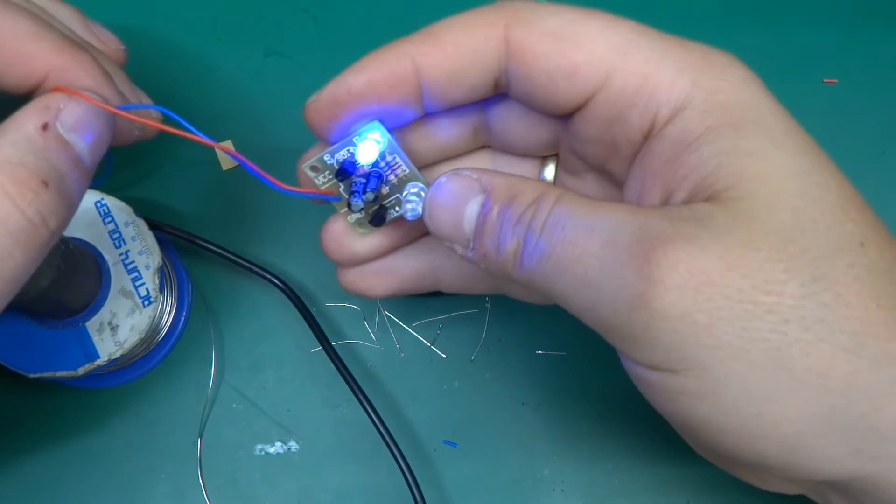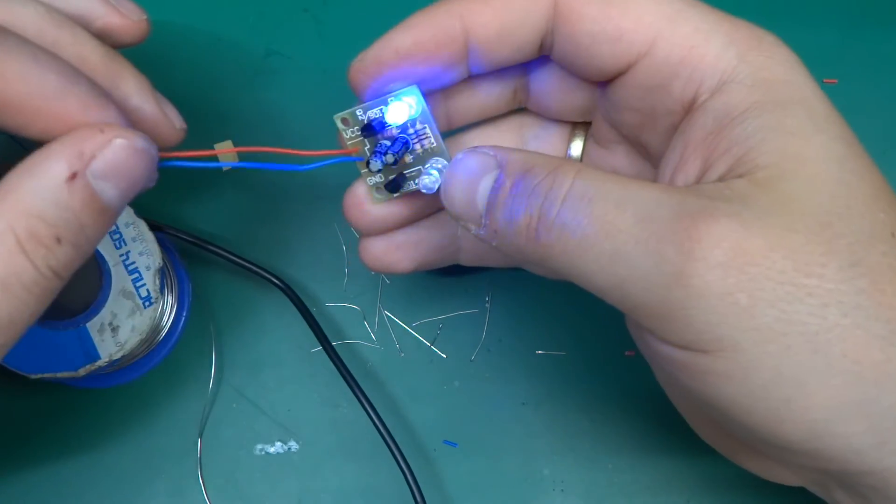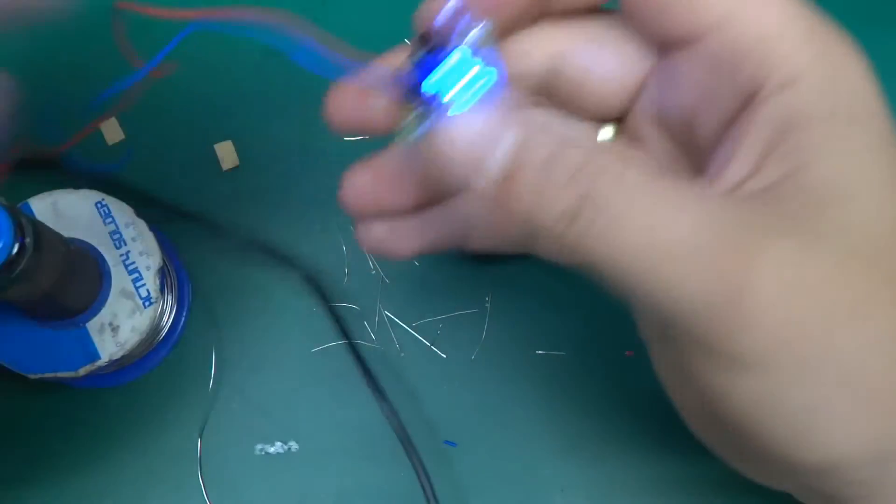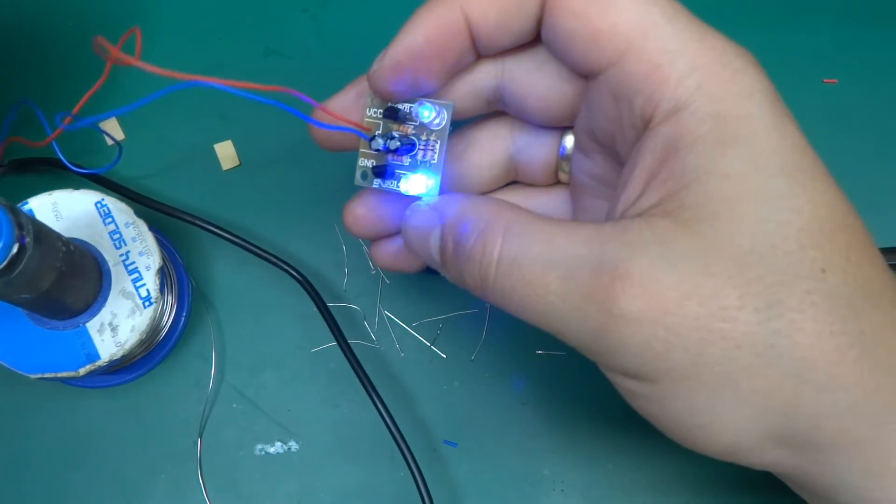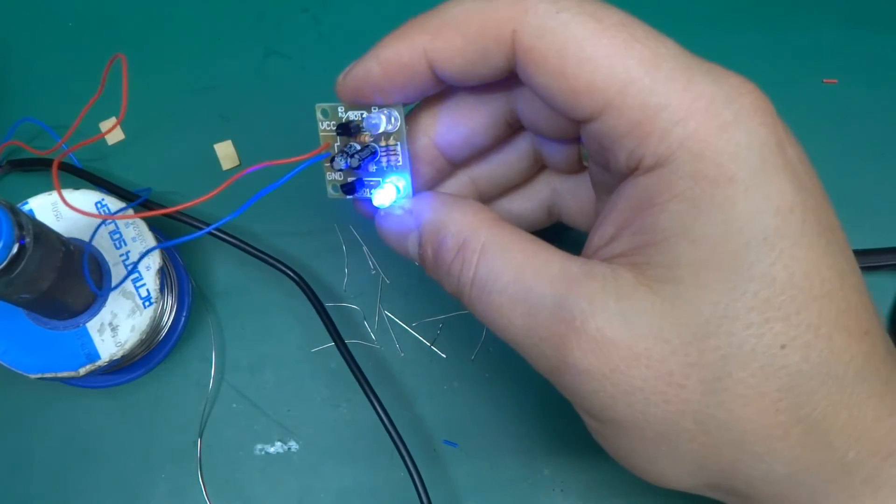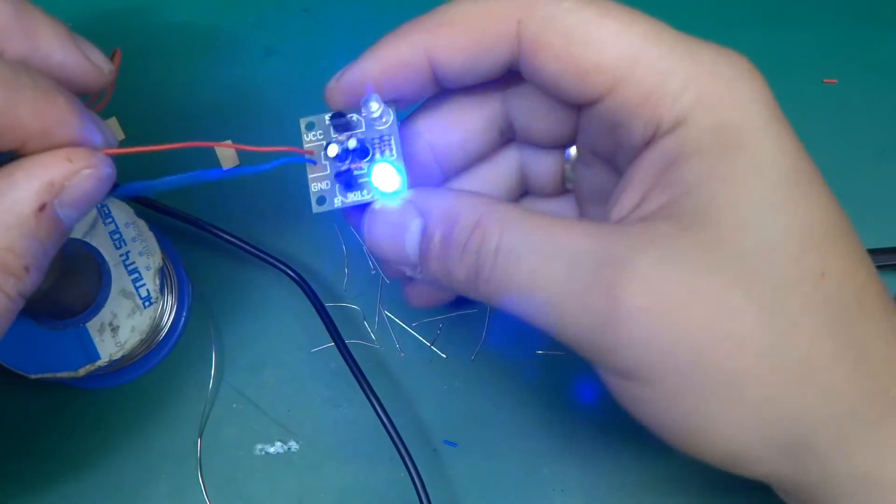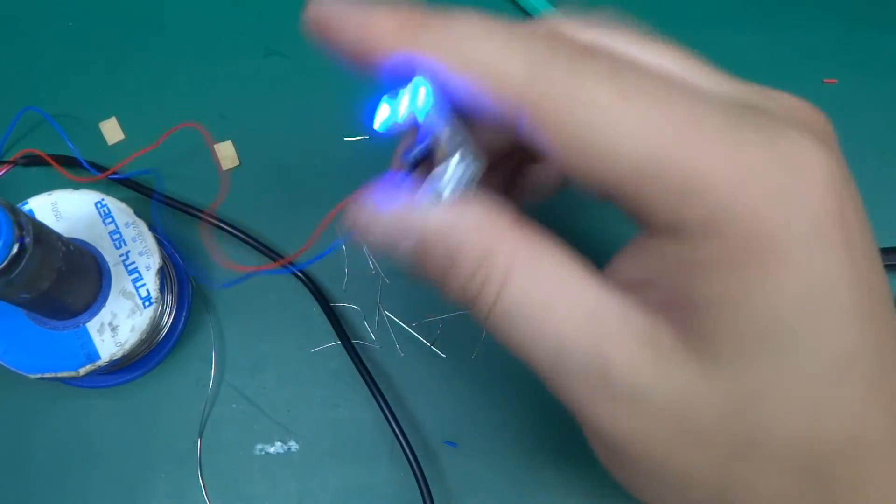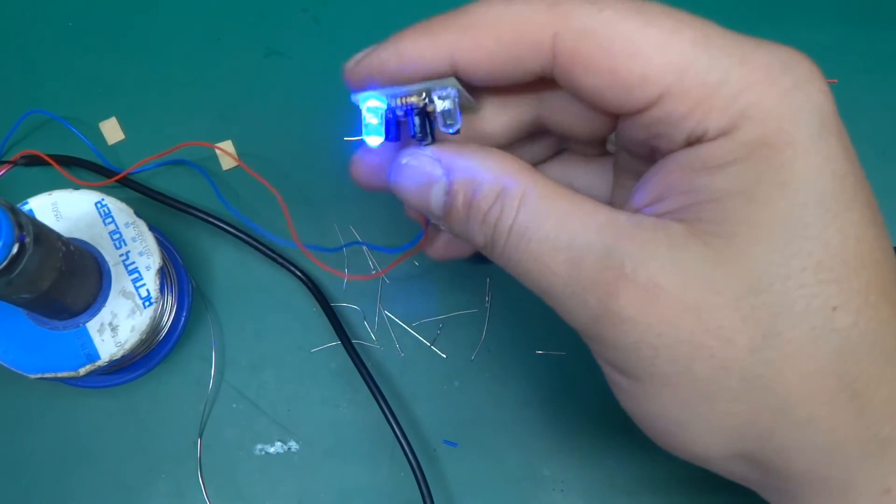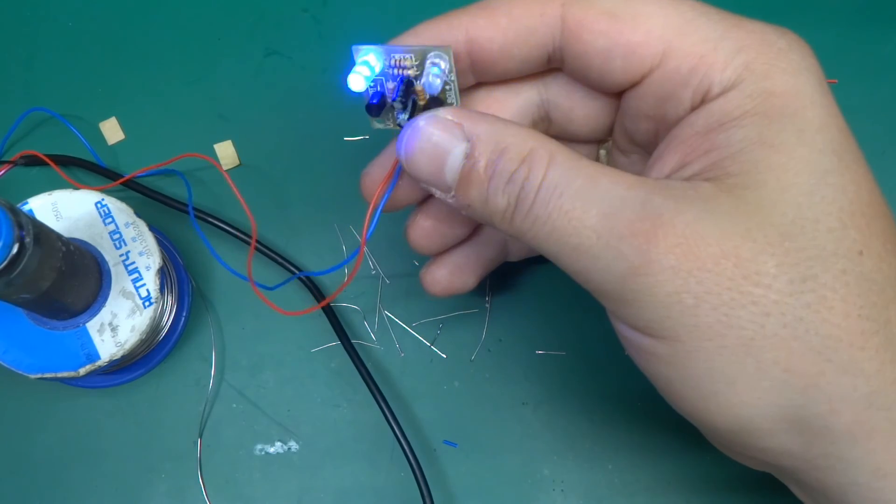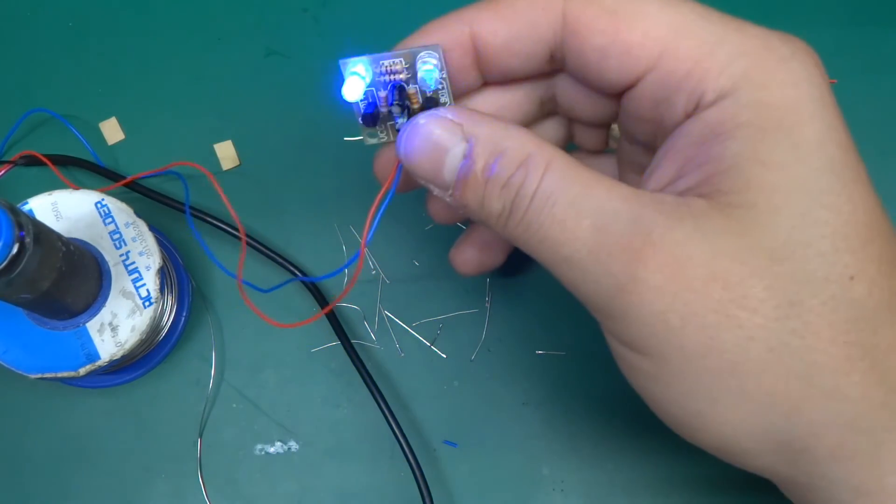There you go - that's the astable multivibrator kit from eBay. As I said, it was one of the first, if not the first thing I've put together, and that's what got me interested in electronics a long time ago. Thanks for watching and subscribe for more random stuff. Hope you enjoyed this little video. Take care!